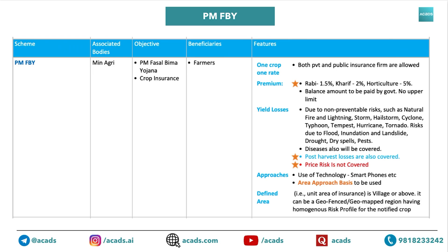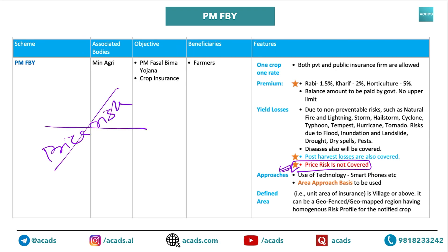Coming to the next thing — losses. You need to remember what is covered under the scheme and what isn't. Rather than remembering everything covered, focus on what is NOT covered: price risk is not covered under the scheme. Post-harvest losses are covered. Other things are obvious and can be guessed from questions. The approach used in this scheme is the area approach basis.